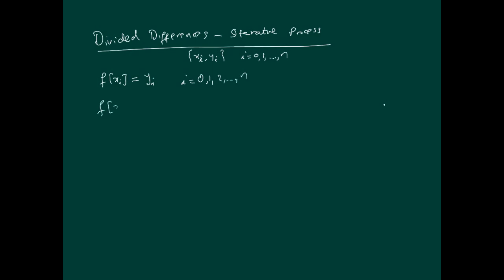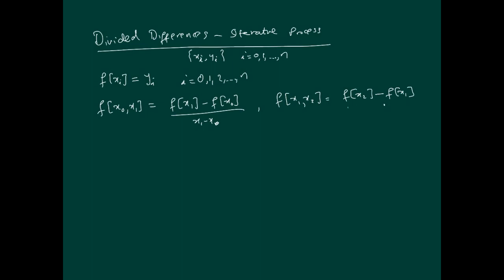After this, we'll define something called f[x0, x1]. This basically takes f(x1) and subtracts f(x0) from it, divided by x1 minus x0. For example, if I wanted to do f[x1, x2], that means f of the higher one minus f(x1), divided by x2 minus x1. Similarly, f[x2, x3] — for every two adjacent points you can create something like this.